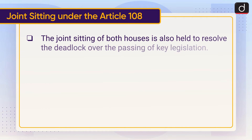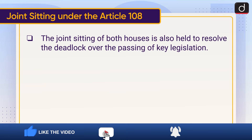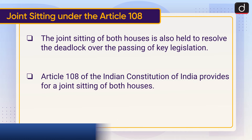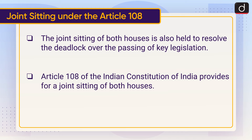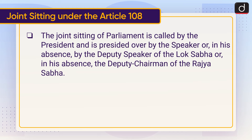Now let's discuss about joint sitting under Article 108. The joint sitting of both houses is also held to resolve the deadlock over the passing of key legislation. Article 108 of the Indian Constitution provides for a joint sitting of both houses. The joint sitting of parliament is called by the President and is presided over by the Speaker, or in his absence by the Deputy Speaker of the Lok Sabha, or in his absence the Deputy Chairman of the Rajya Sabha.